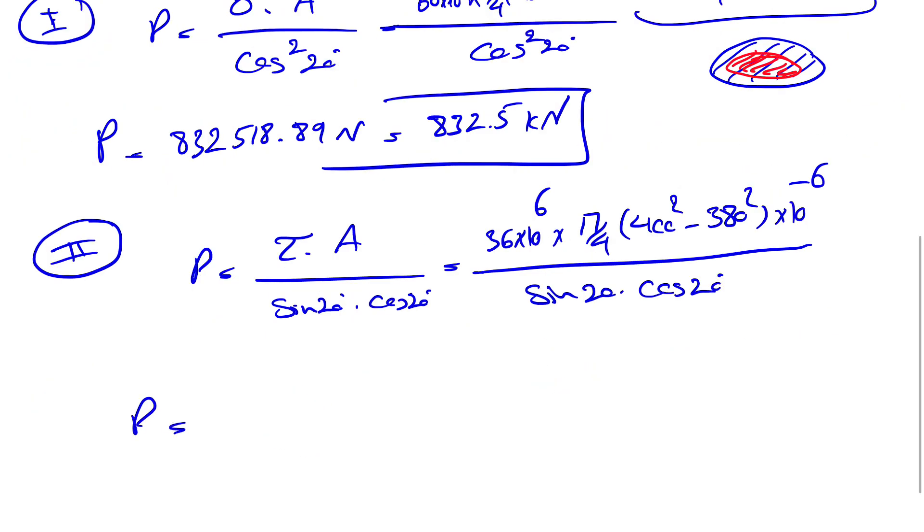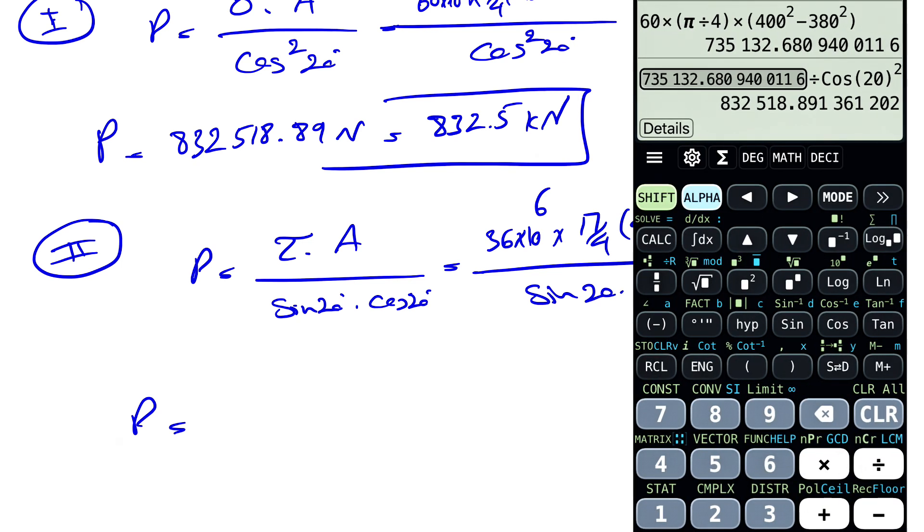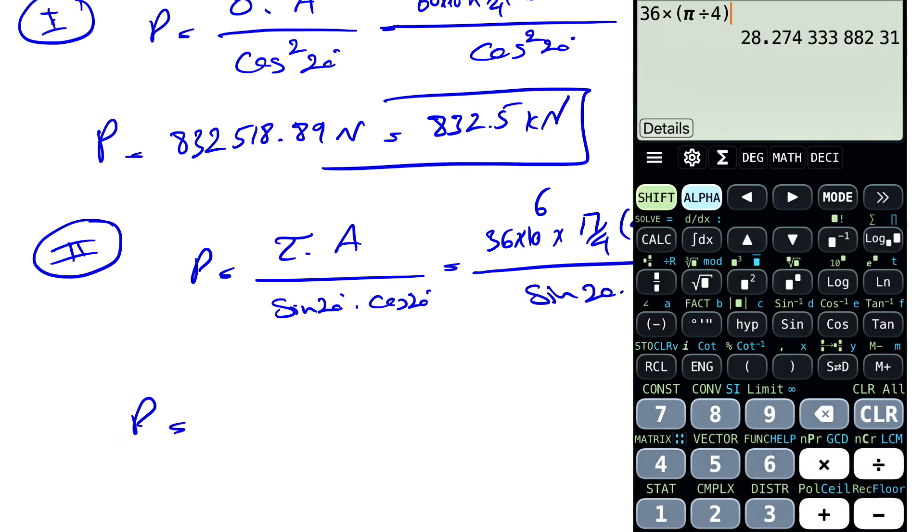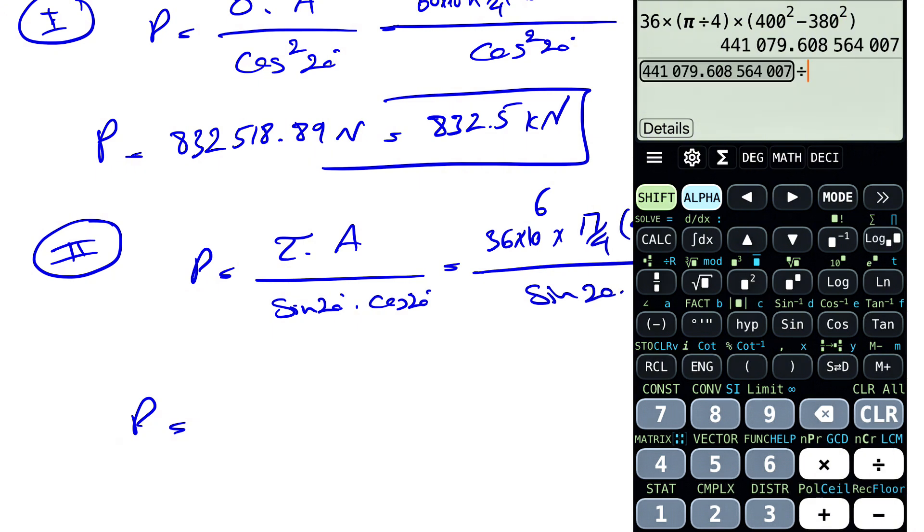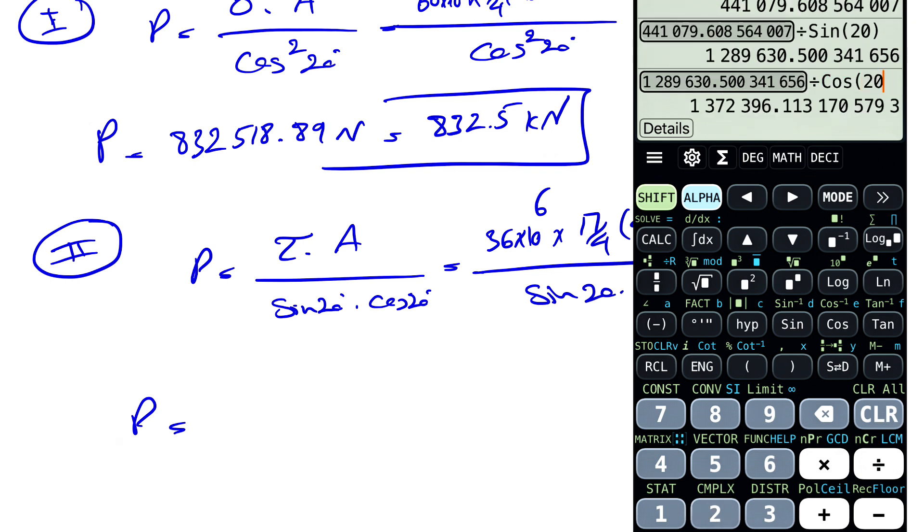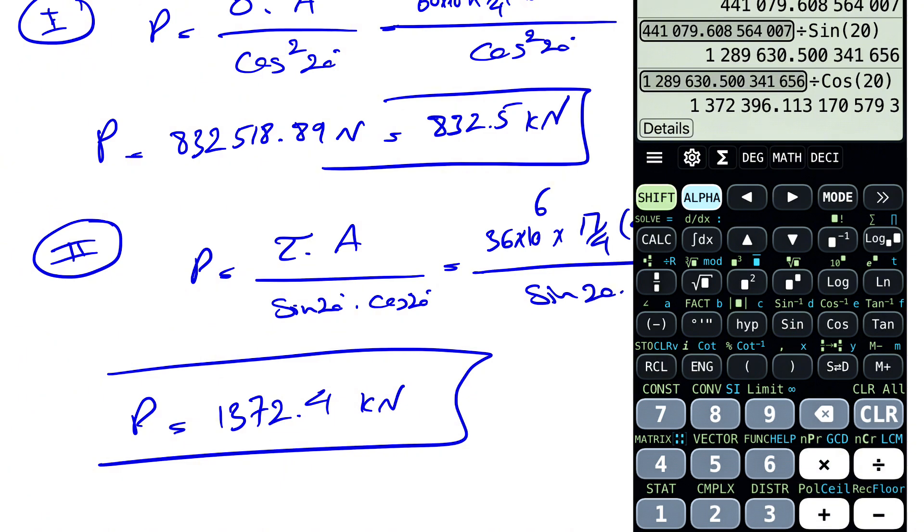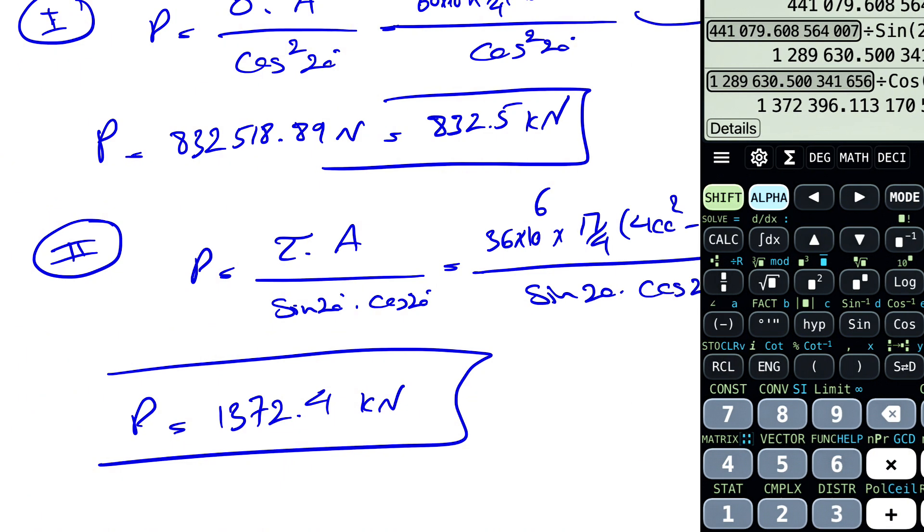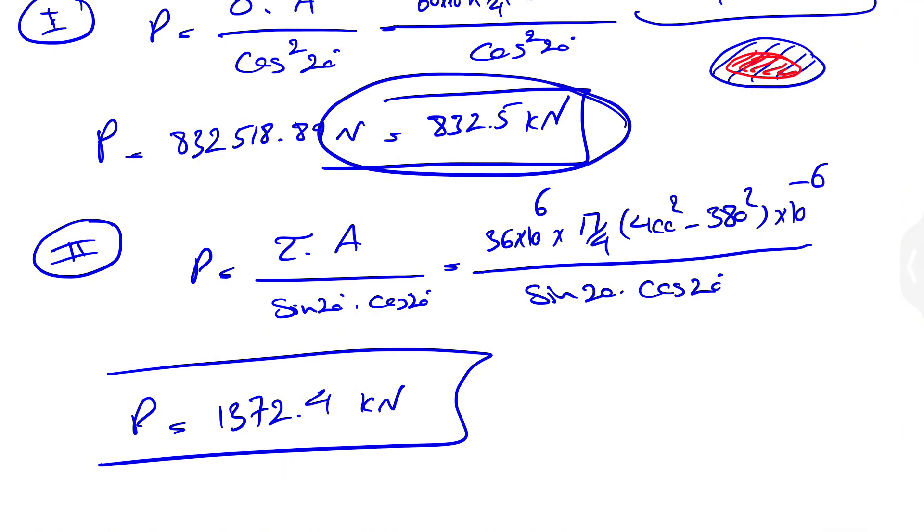So let's find the value for shearing stress. 36 times pi divided by 4 times 400 squared minus 380 squared. And we're going to divide that by sine of 20 divided by cosine of 20. So that's going to be 1372.4 kilonewtons. So one of them is 1000 something and the other one is 800.